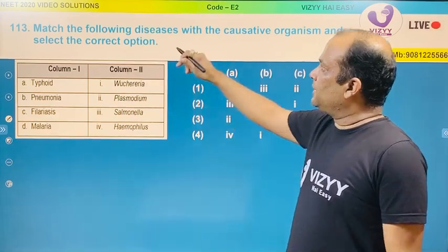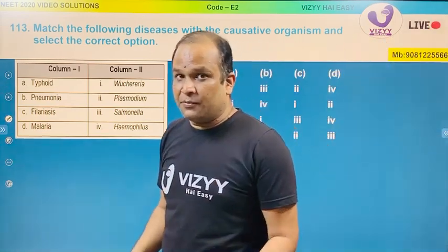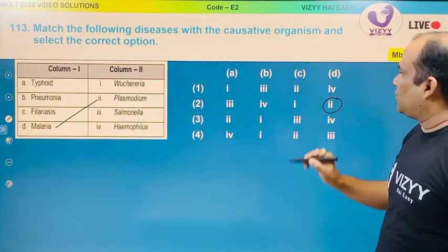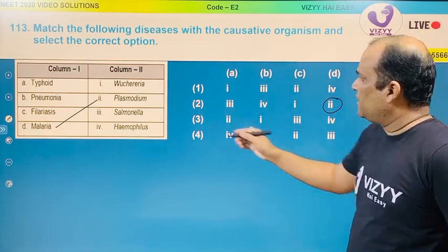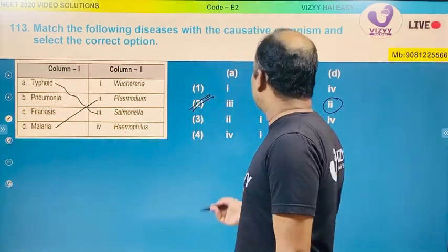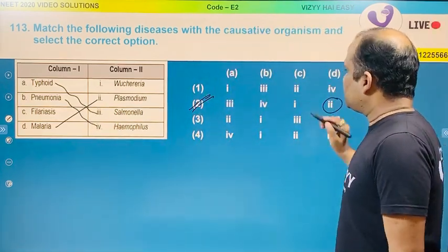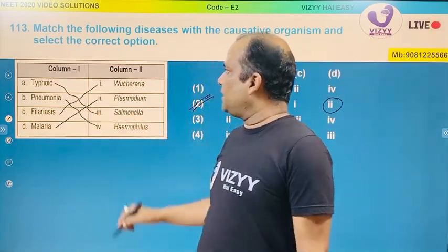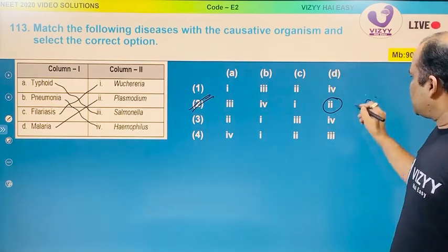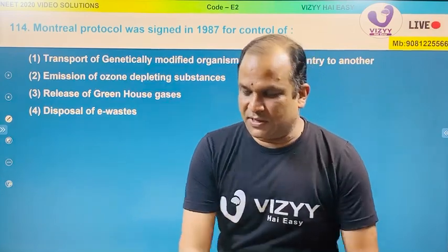Question 113: match the following disease with the causative organism and select the correct option. The answer is 2 — there is only one correct option. Typhoid: Salmonella typhi. Pneumonia: Haemophilus or Diplococcus pneumoniae from the textbook. Filaria: Wuchereria. Therefore the answer is 2.